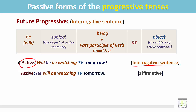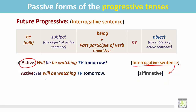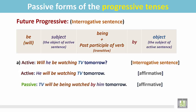This is the statement or affirmative form of the interrogative sentence: 'He will be watching TV tomorrow.' To change this active sentence into passive, we have to find out the object. The object of the verb 'watching' — watching what? — TV. And TV is the object of the verb 'watching'. In the passive sentence, the object becomes the subject.